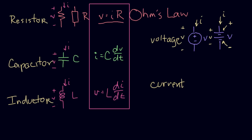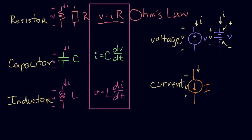Now for the current source. A current source is a source of constant current, drawn as a circle with an arrow inside indicating which way the current is going, and labeled with I. If it's a constant current we often use a capital I; if it's a constant voltage we often use a capital V. We label the voltage carefully — plus, minus, V — and the current flows in the direction of the arrow.